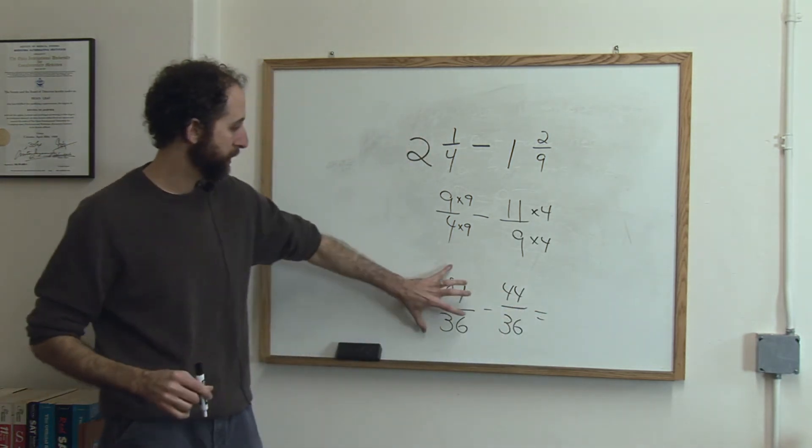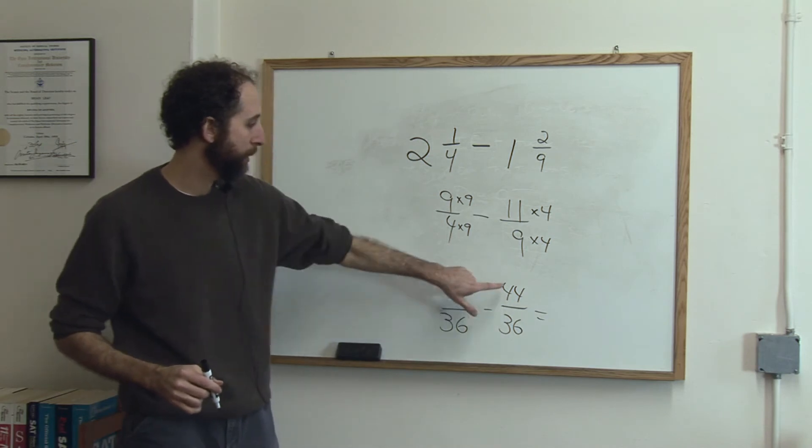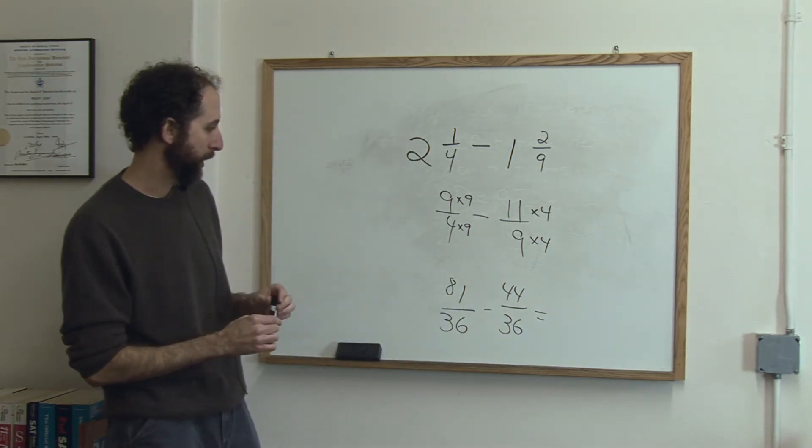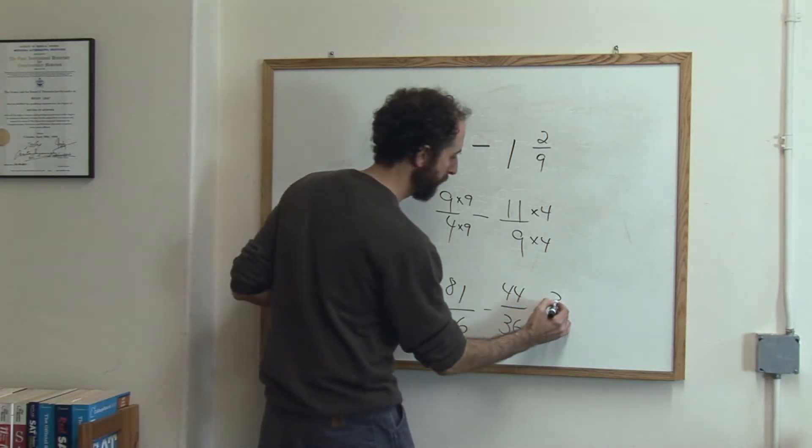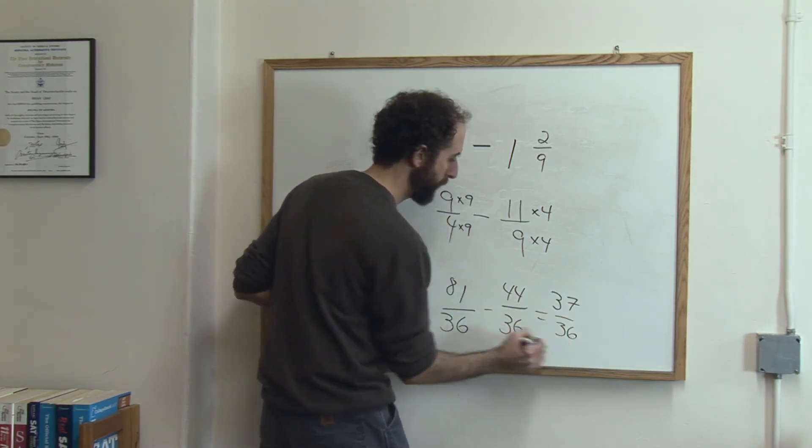So the final answer of this number minus that number, 81 minus 44, is 37 over 36.